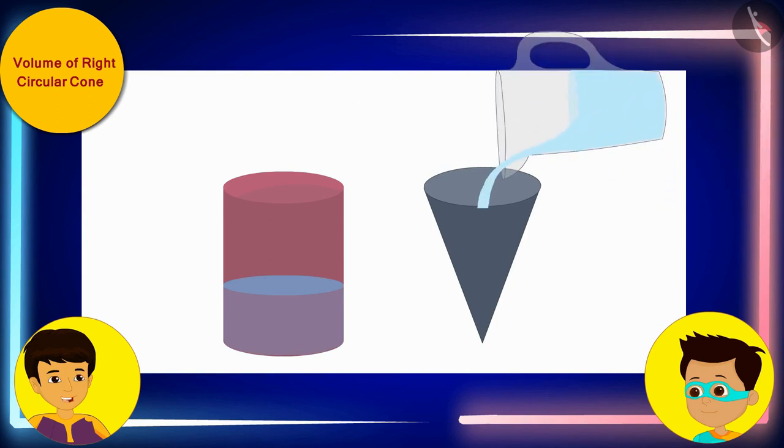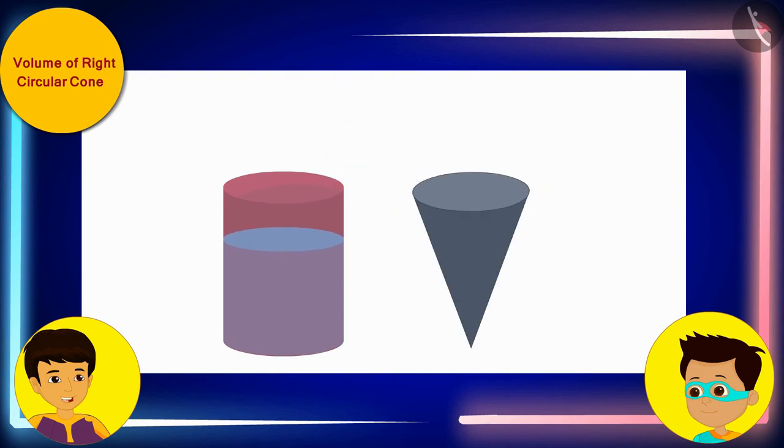Now, we will again fill the conical vessel completely with water and pour it into the cylinder. As you can see, the cylinder is still not fully filled.